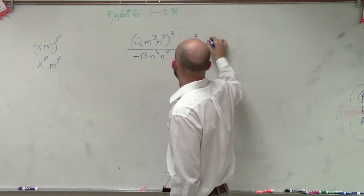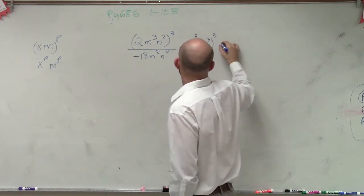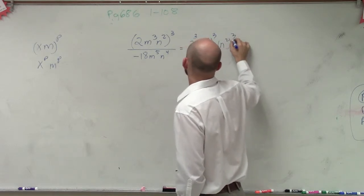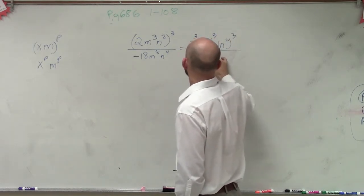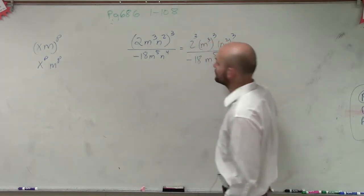So it's 2 cubed, m cubed cubed, and n squared cubed, all over negative 18, m to the fifth, n to the fourth.